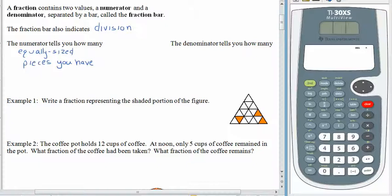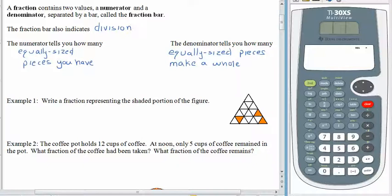The denominator tells us how many equally sized pieces make a whole. The root of the word denominator is nomen, which means to name. The denominator not only tells you how many sized pieces make a whole, but it also tells you what those pieces are called. If you have 3 sevenths, you have 3 pieces, it takes 7 pieces to make a whole, and each of those pieces is called a seventh.